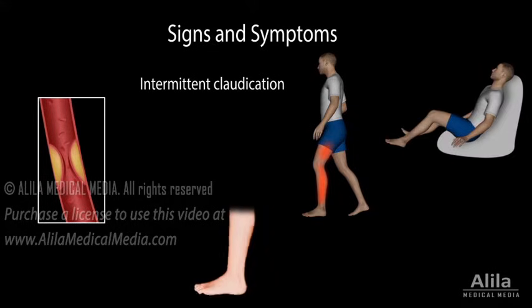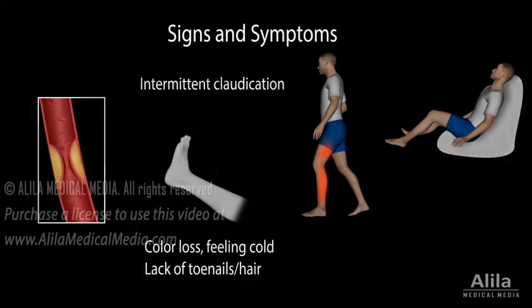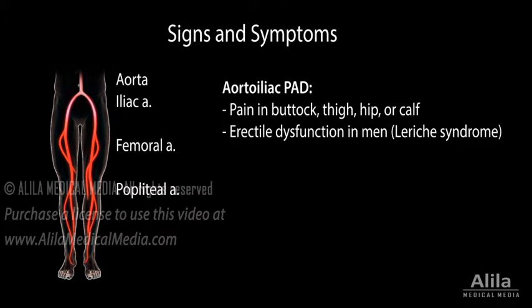The affected leg and foot may lose color and feel cold, especially when the foot is elevated. There may also be a lack of growth of toenails and hair. The location of pain depends on the site of obstruction — the more proximal the site of blockage, the more widespread the pain. The calf is the most common site of pain.